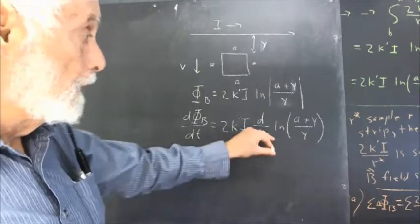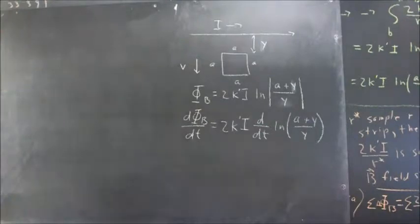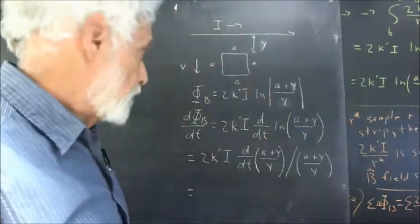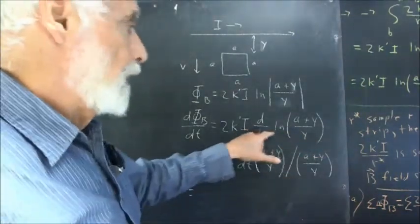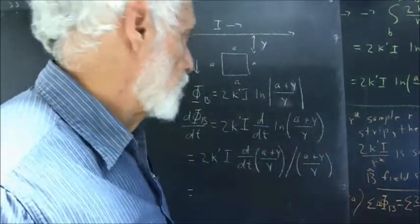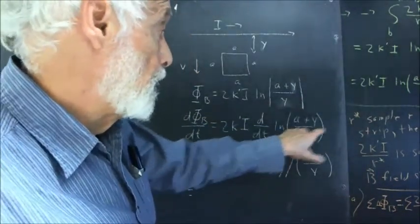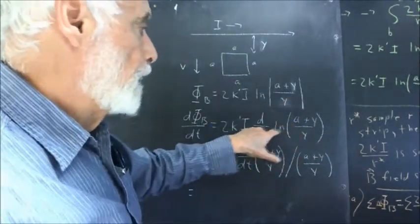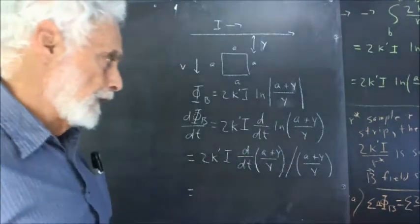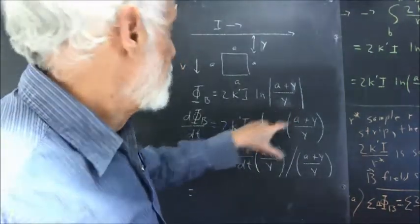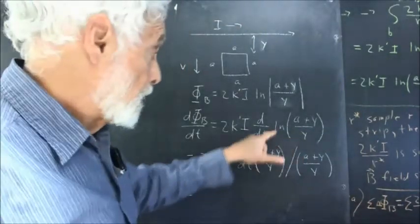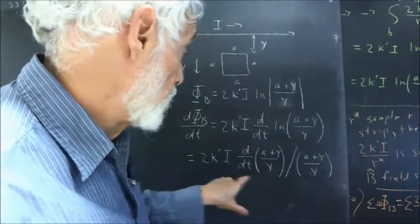What's the derivative with respect to t of this natural log? The first step is to recognize that you have a chain here — a natural log of (a + y) over y. The inner function is (a + y) over y, which itself has a derivative we haven't determined. Then the outer function is the natural log. So the derivative is going to be the derivative of the inside function, (a + y) over y, divided by (a + y) over y.